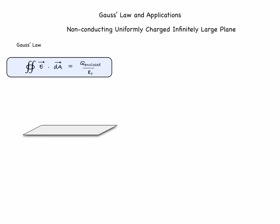Let's look at one application of Gauss's law: finding the electric field produced by a non-conducting, uniformly charged, infinitely large plane. The charge is distributed uniformly along the surface and along the (very small) thickness of the plane. We can define the surface charge density sigma as the charge per unit area, dq over dA, and for a uniformly charged plane, sigma is constant.